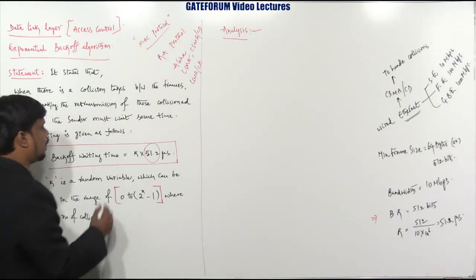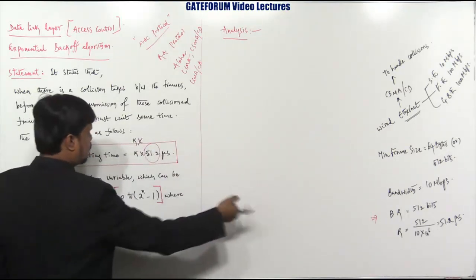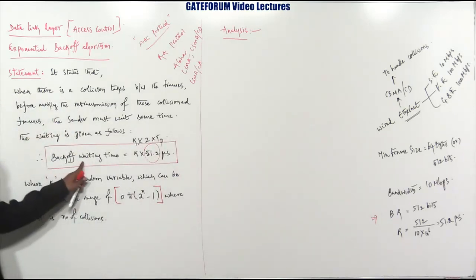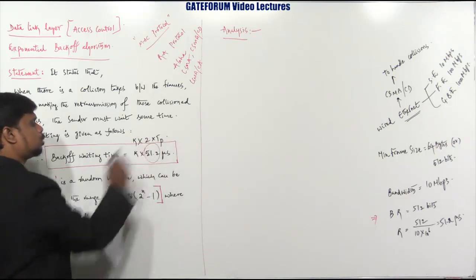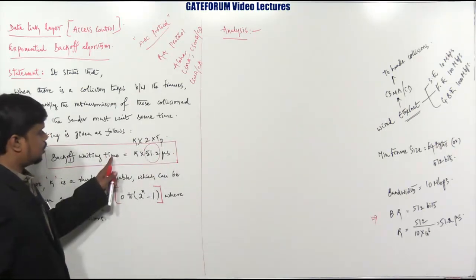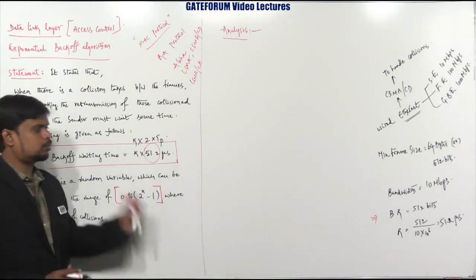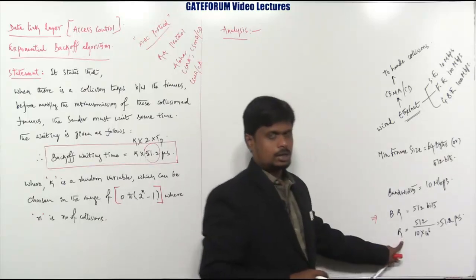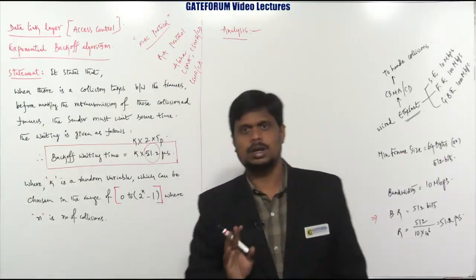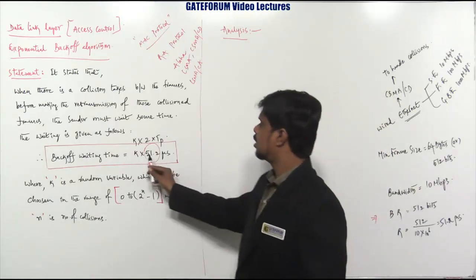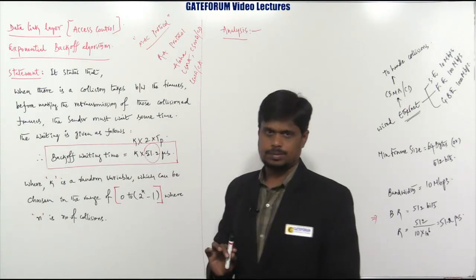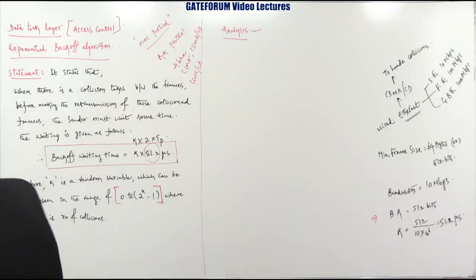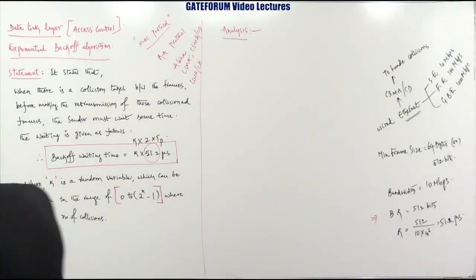Theoretically, the backoff waiting time can be written as k × RTT, where RTT = 2 × Tp. So theoretically: backoff waiting time = k × 2 × Tp. Numerically: backoff waiting time = k × 51.2 microseconds. So 51.2 microseconds is the numerical value of RTT = 2 × Tp. Now we are going to start the analysis part.